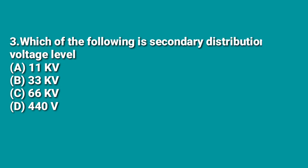The third question is: which of the following is the secondary distribution voltage level — 11 kV, 33 kV, or 66 kV? The answer is D. The 11 kV, 33 kV, and 66 kV levels come under primary distribution; after that, 11 kV is stepped down to 440 volts three-phase four-wire system, which is secondary distribution.